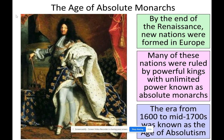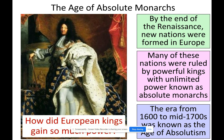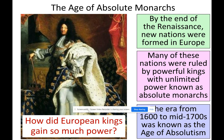The era from the 1600s to the mid-1700s was known as the age of absolutism. How did European kings gain so much power? Let's check it out.